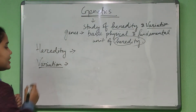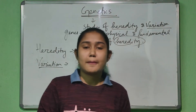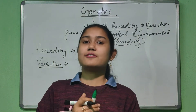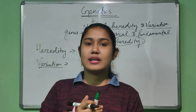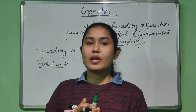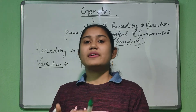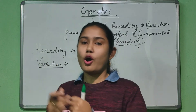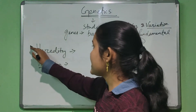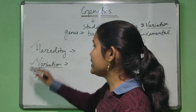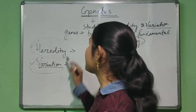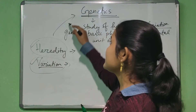So what is variation? Variation is the difference in the characteristic features between offspring, or between the parents and the offspring. Here we can see heredity and variation, and we will study these in detail in the genetics chapter.